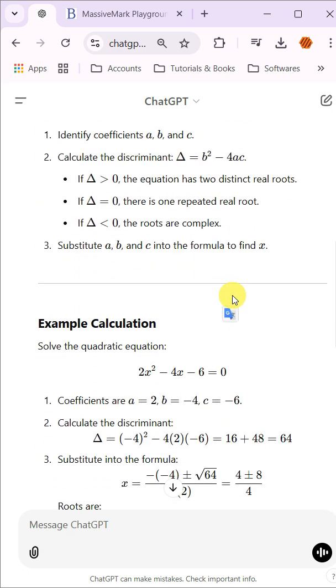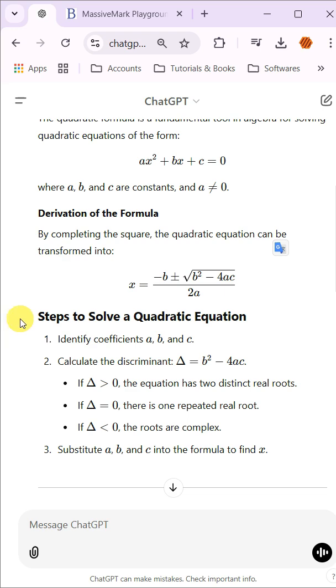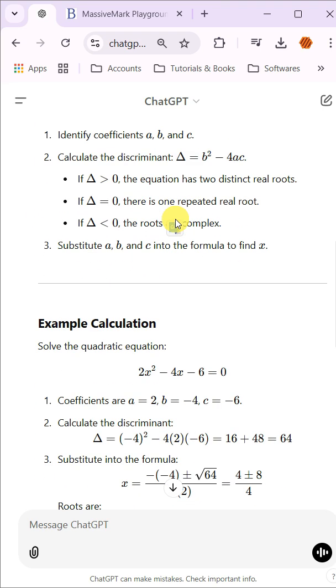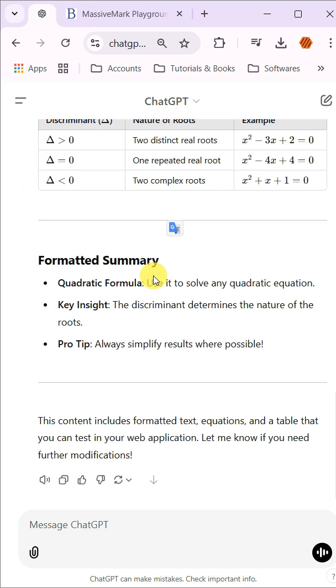Let's start by observing the content generated in ChatGPT. You can see that the headings are bolded, there are mathematical equations included, and tables are well formatted. The goal is to transfer this content into MS Word without losing any of these elements.